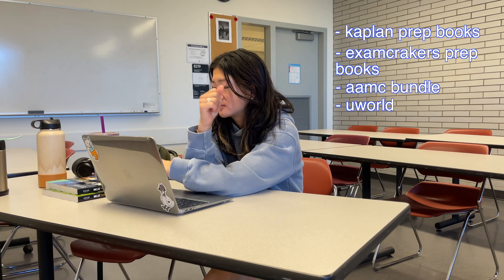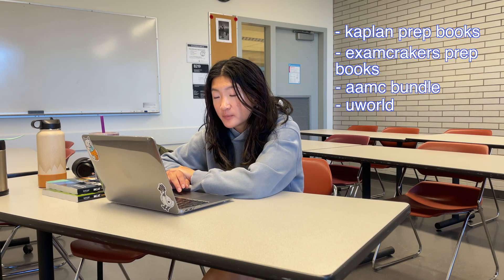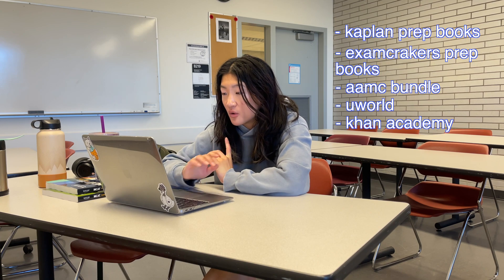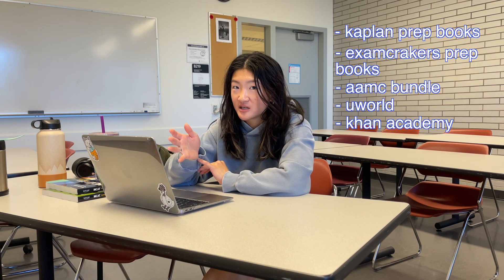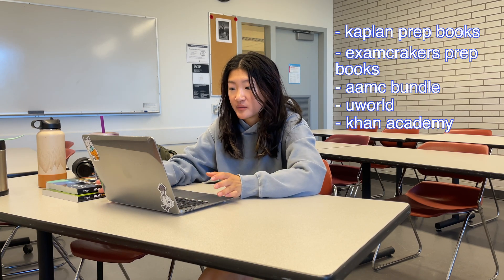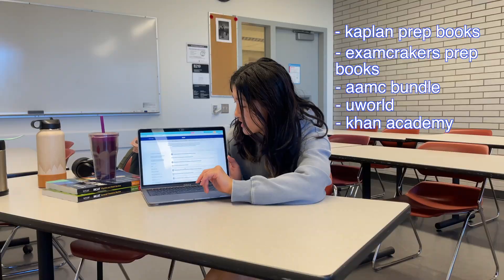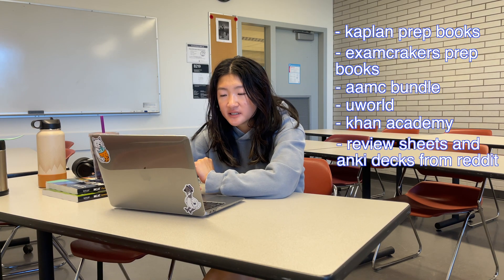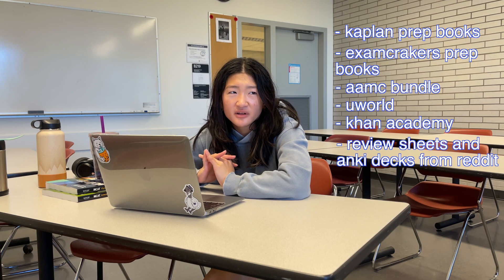By the way, I bought Kaplan and Exam Crackers on Facebook Marketplace for like 40 or 50 dollars. For free resources, there's Khan Academy, which worked with the AAMC to make MCAT prep content. I use that for practice problems as I go through chapters — I'll do a chapter, do the practice problems, then move on. The next morning I'll do my UWorld practice problems. Khan Academy has really great videos with literally every topic, and then practice problems that come with each section. I also found review sheets and an Anki deck that I do on the bus or when I have free time.